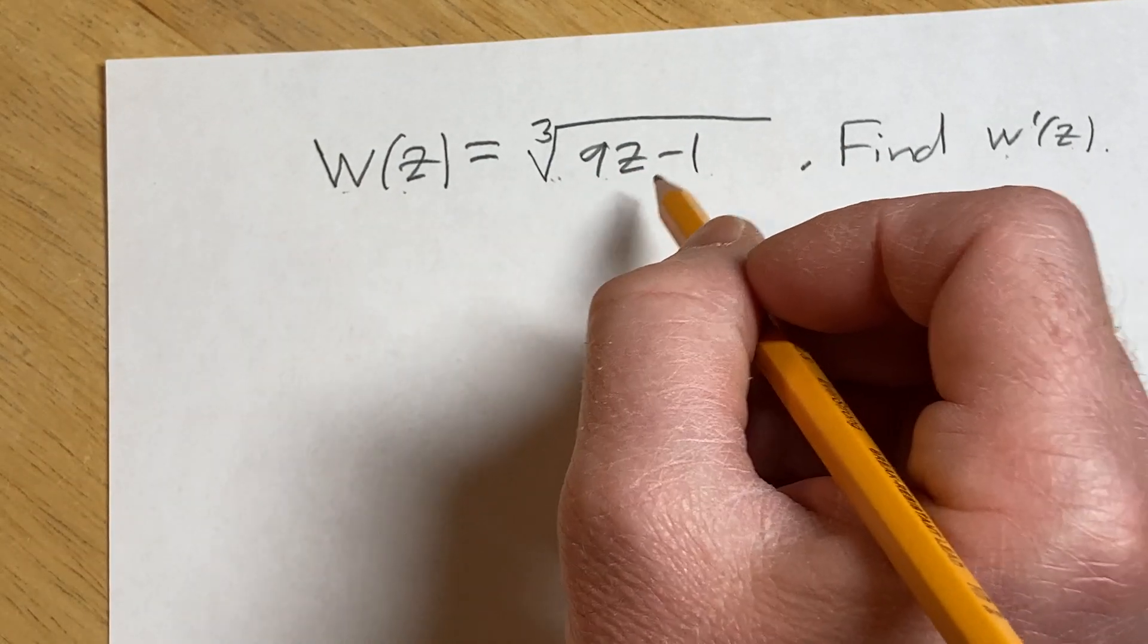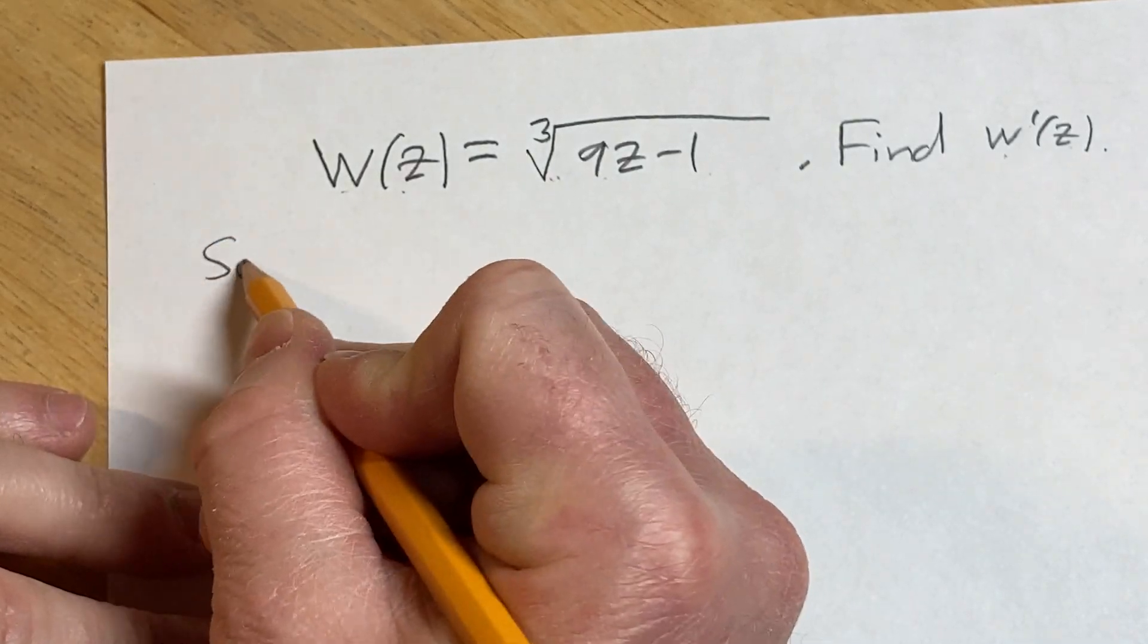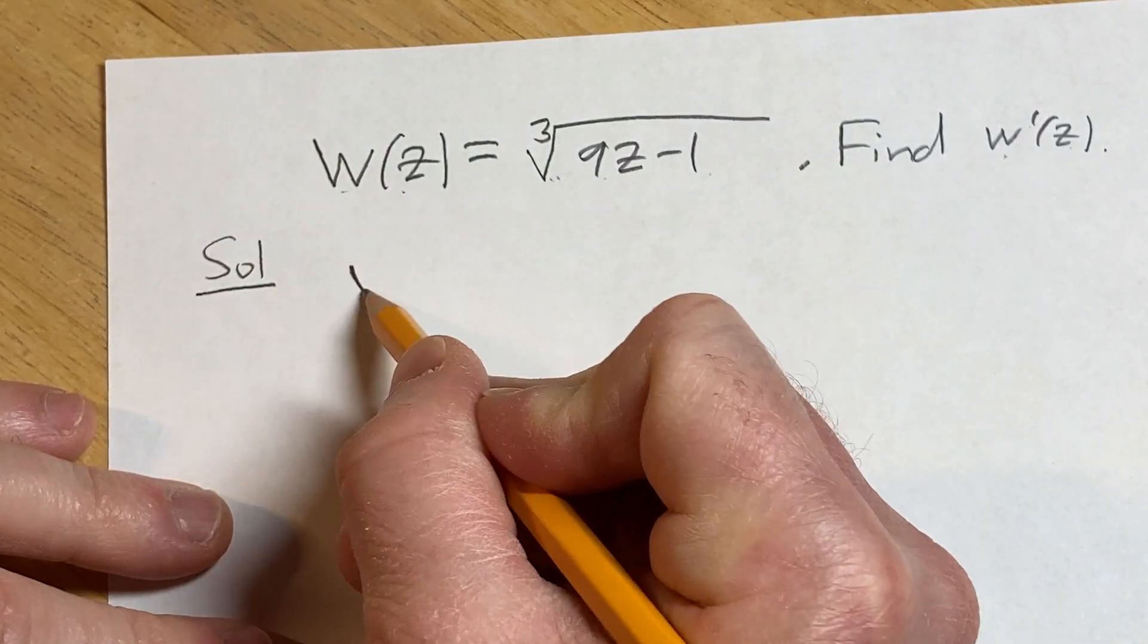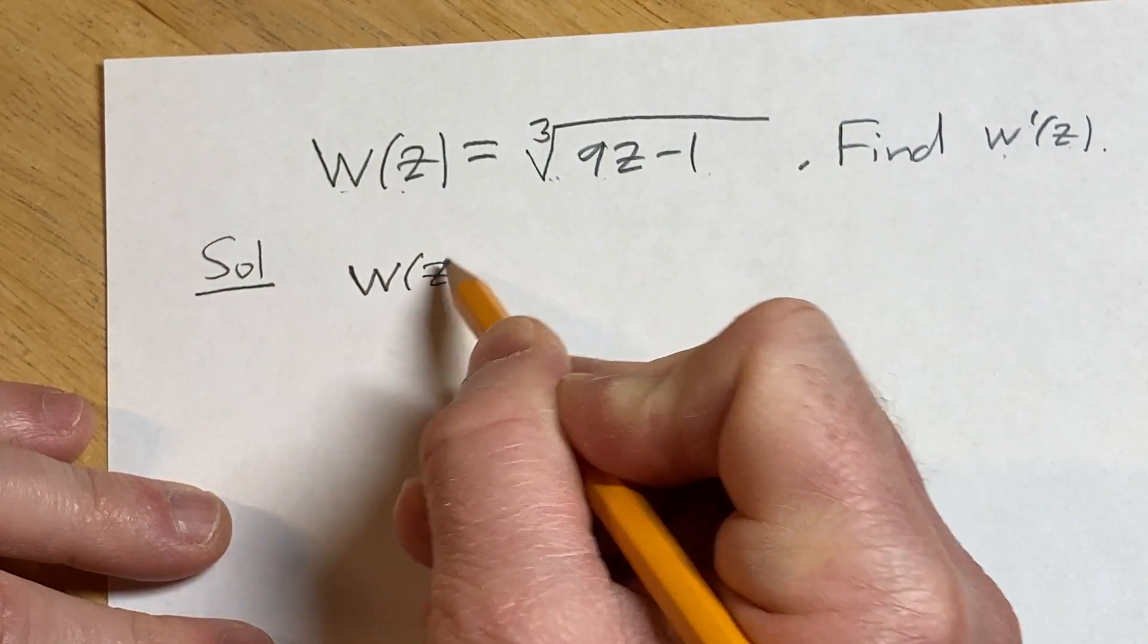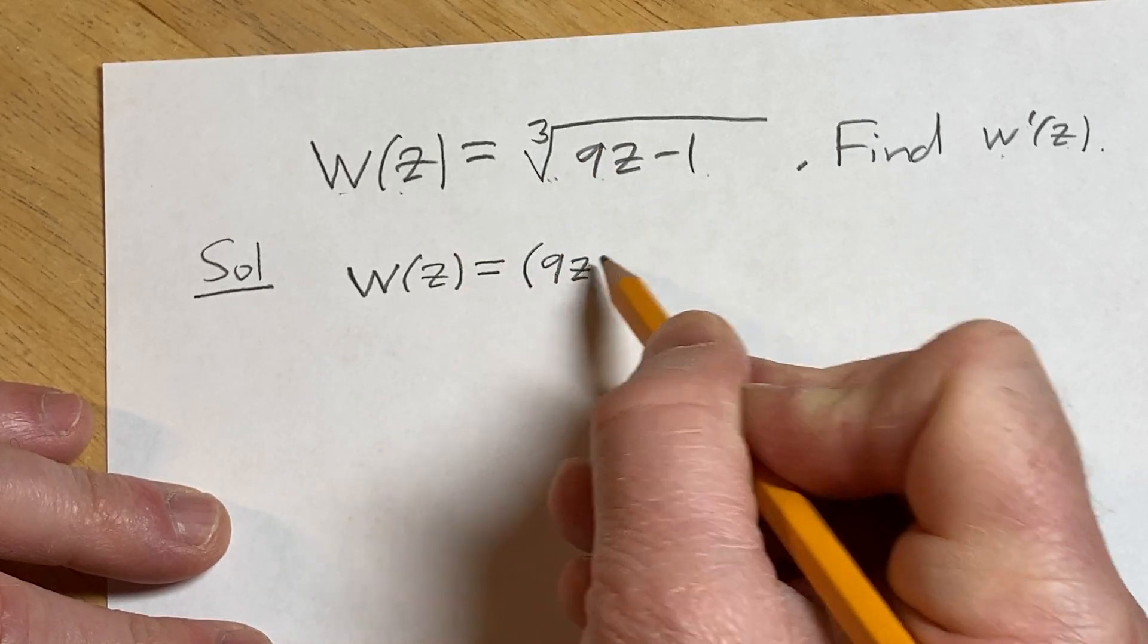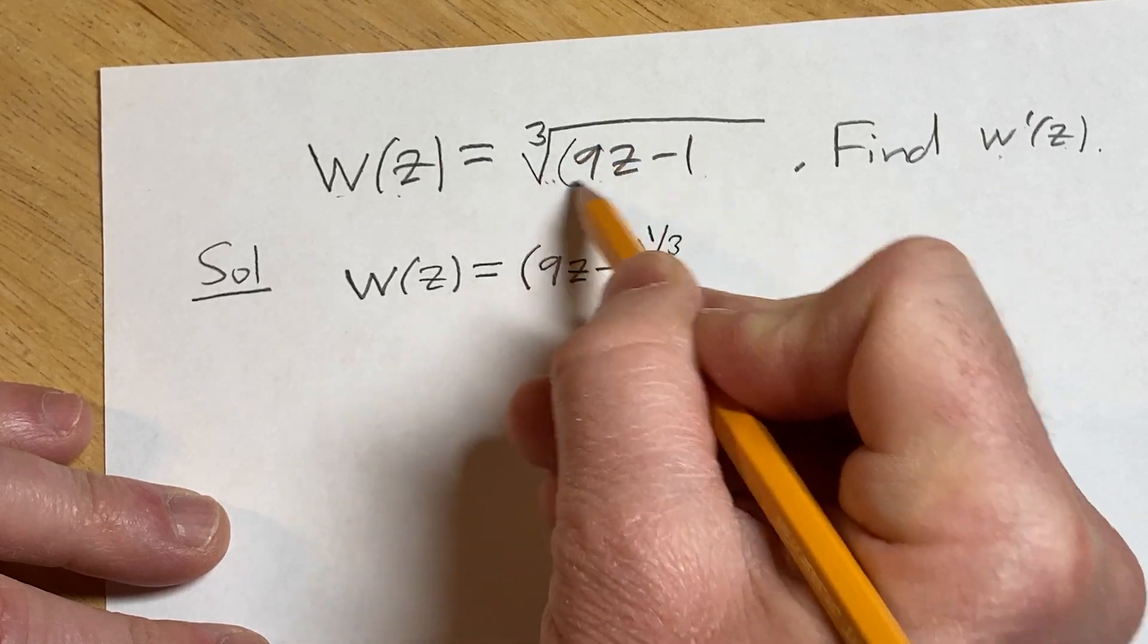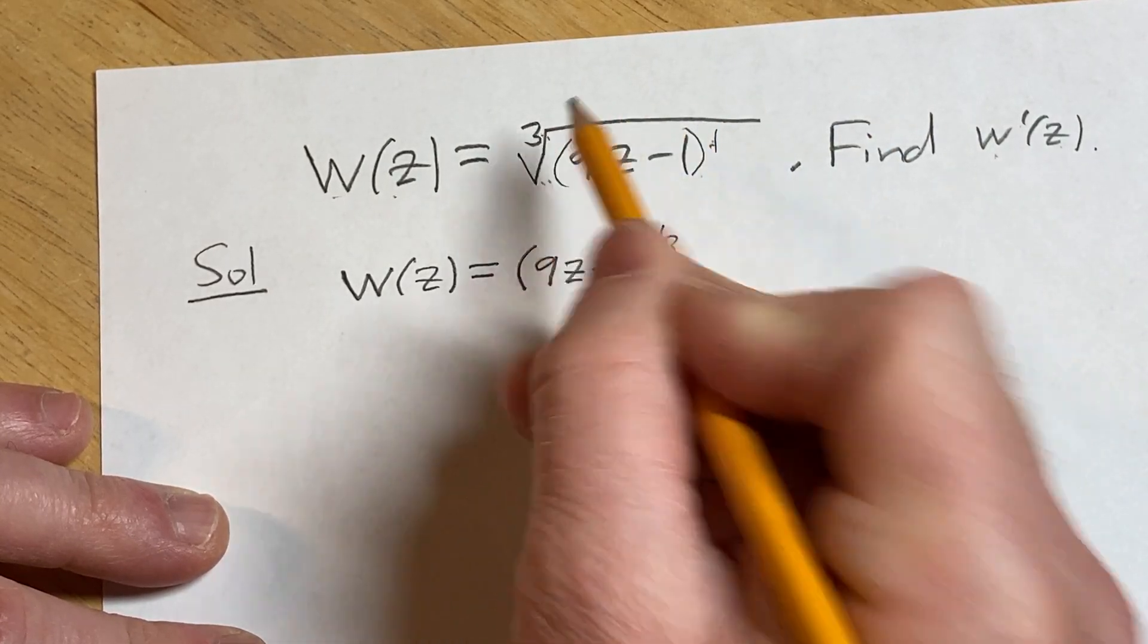To do this, we'll start by rewriting the cube root as a power function. Solution: w(z) = (9z - 1)^(1/3). There's really a 1 here, so it's 1 over 3.